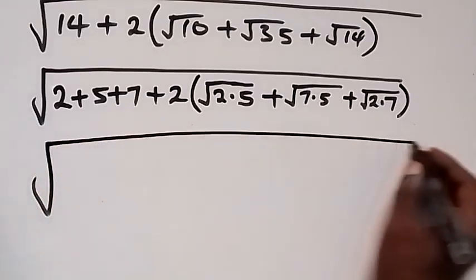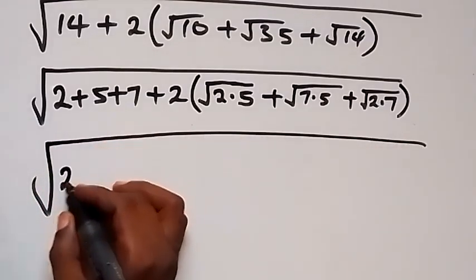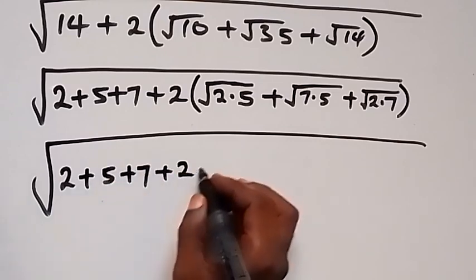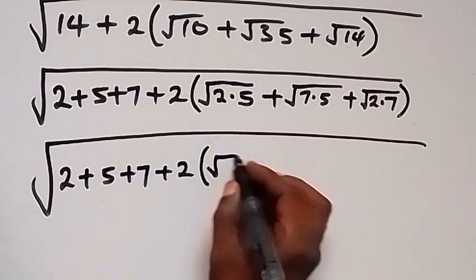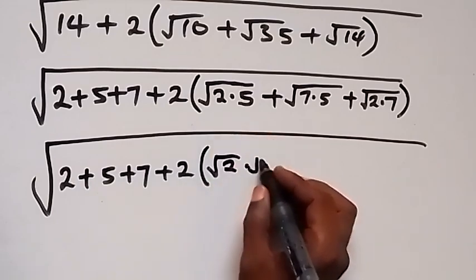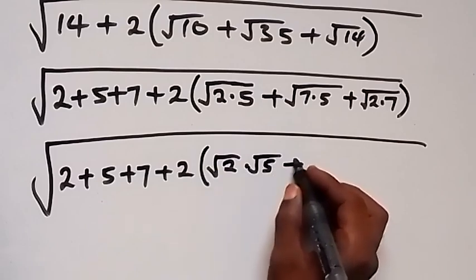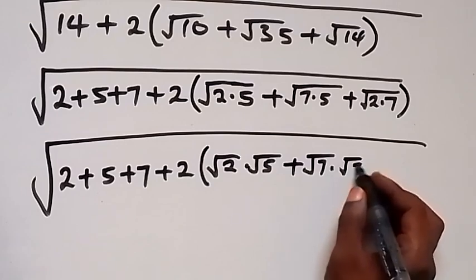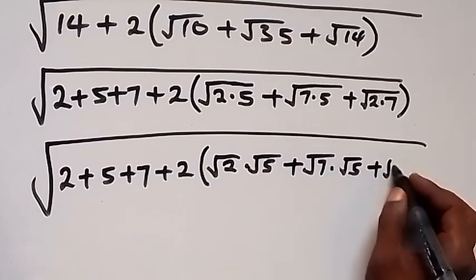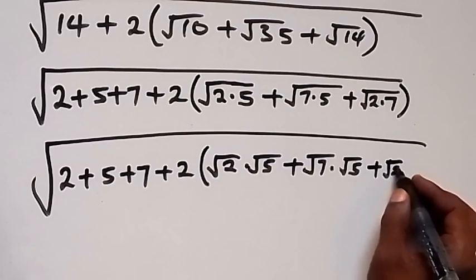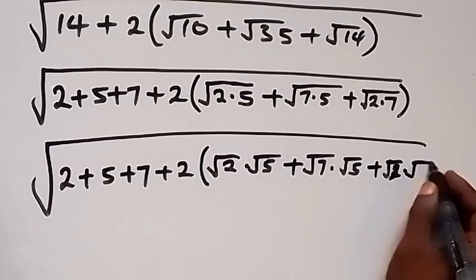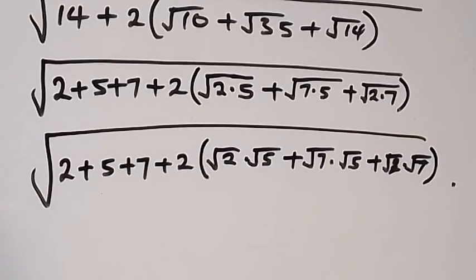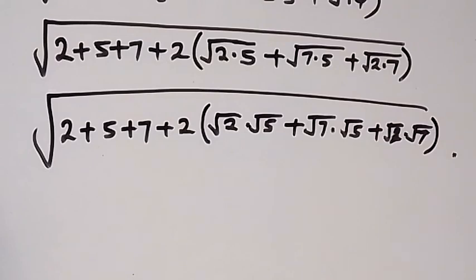This will be square root of: we can still leave this as 2 plus 5 plus 7, then plus 2 multiplied by — when we separate this we have root 2 times root 5, then plus here we have root 7 times root 5, and we have plus root 2 times root 7.